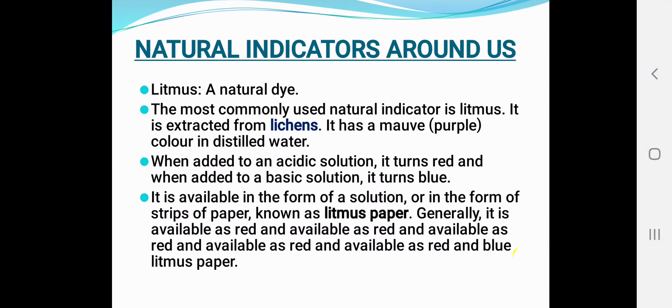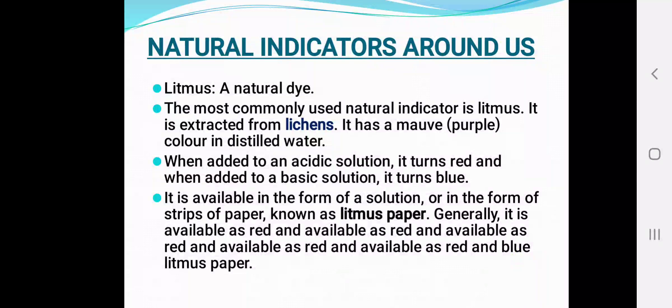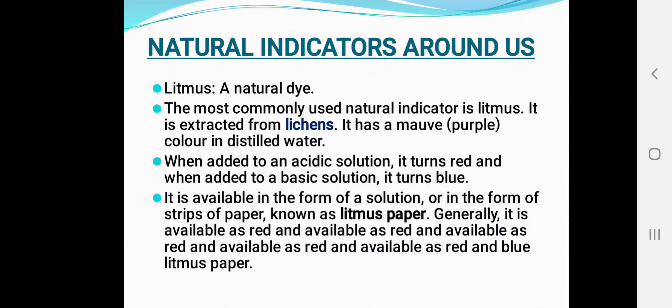The most commonly used natural indicator is litmus. It is extracted from lichens. I will show you a picture of lichens on the next slide. Litmus has a purple color in distilled water. Distilled water is neutral — it does not belong to the acidic or basic category. Whenever we add litmus to distilled water, it will be purple in color.